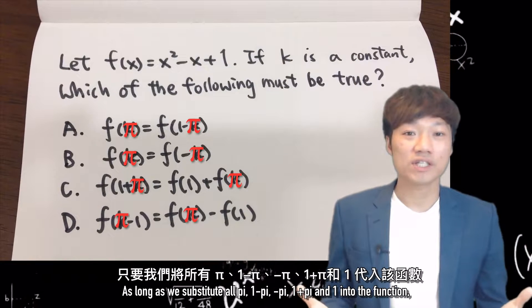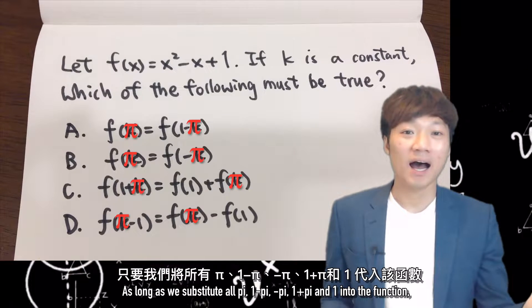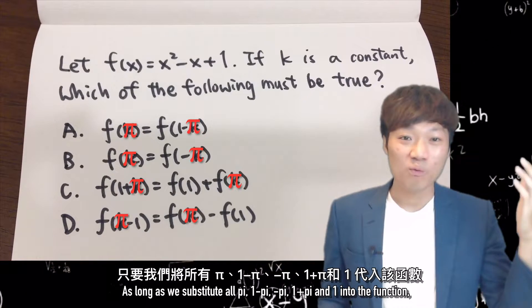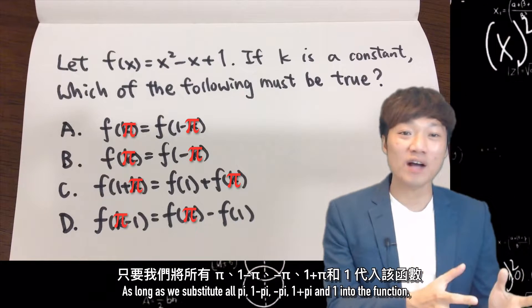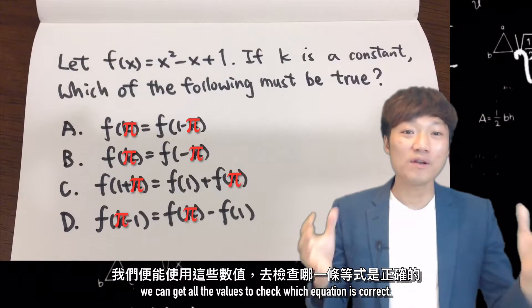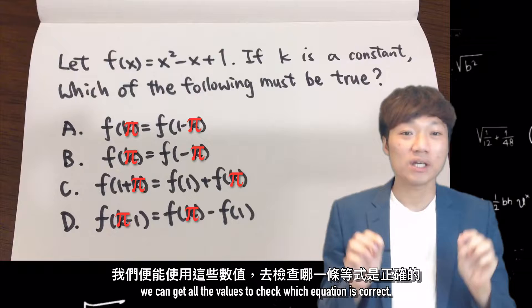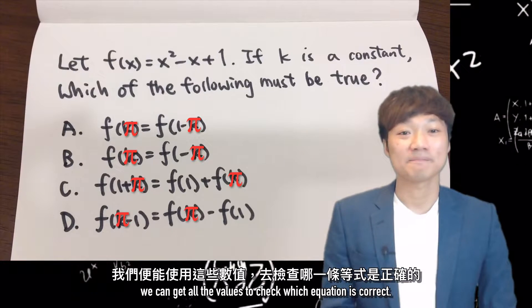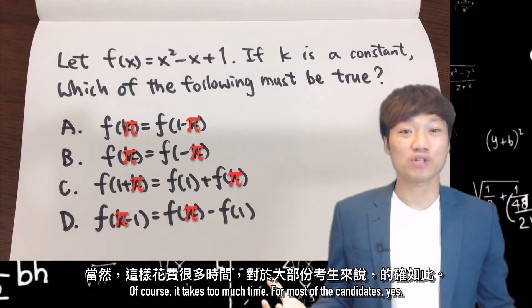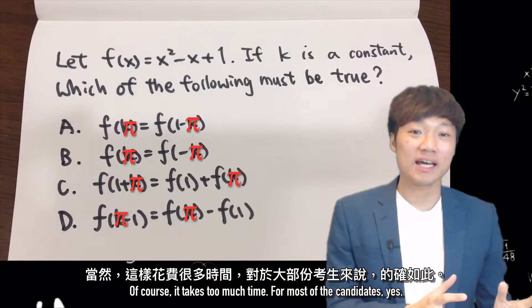As long as we substitute all pi, 1-pi, negative pi, 1 plus pi into the function, we can get all the values to check which equation is correct. Of course, it takes too much time for most of the candidates.